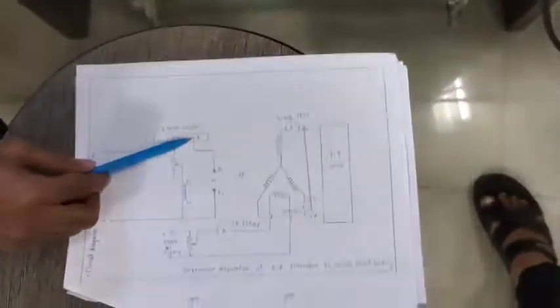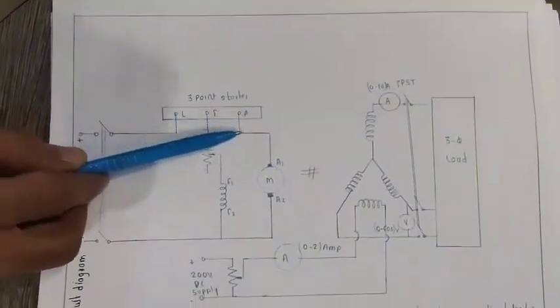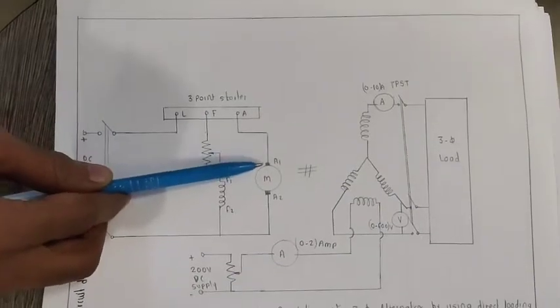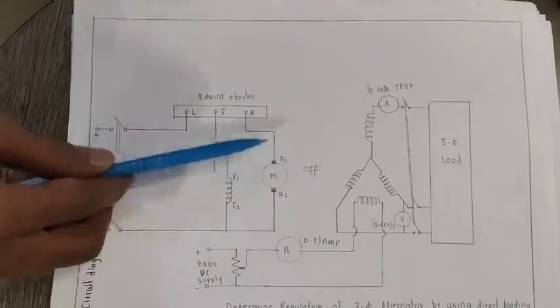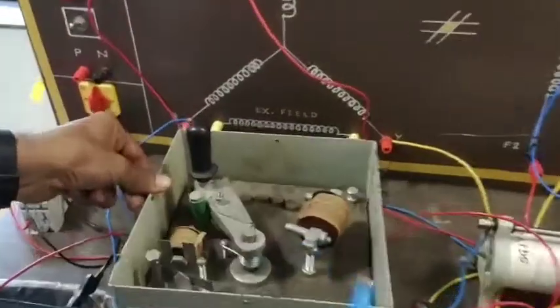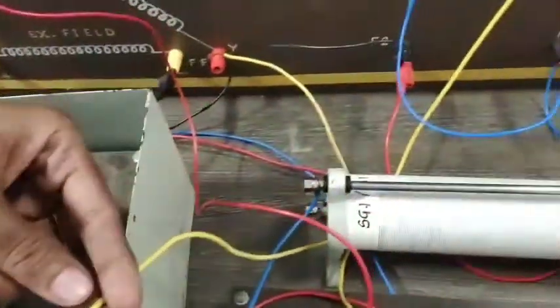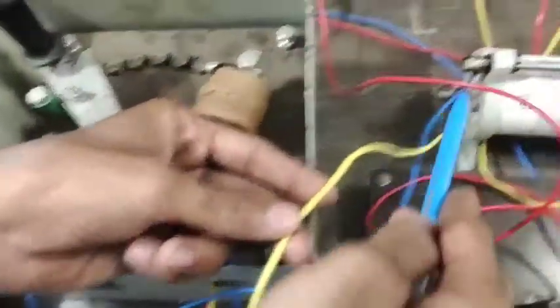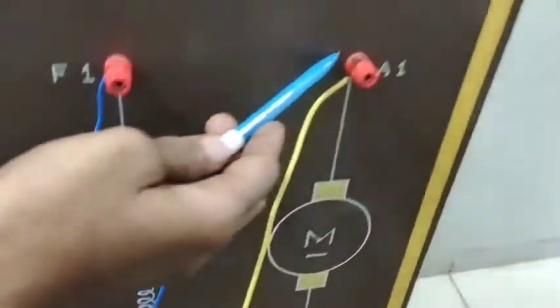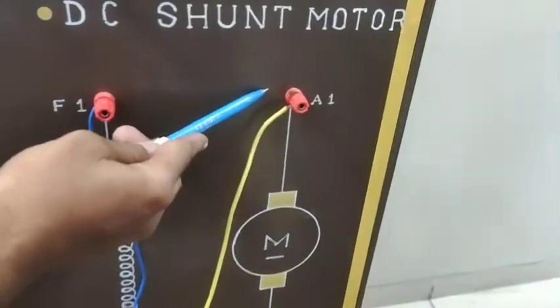The second connection is A. The A terminal is connected to A1. You can see here this is the A terminal connected with the yellow wire — A is connected to A1.